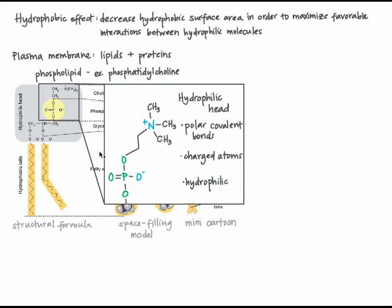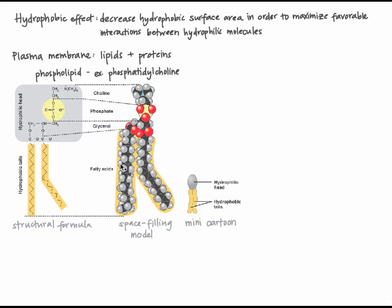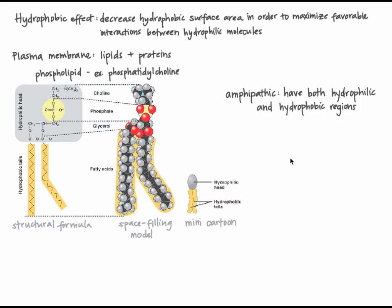The hydrophilic head varies between types of phospholipids, but all contain some fully and/or partially charged atoms. Phosphatidylcholine contains both fully charged atoms, shown in blue, and partially charged atoms, shown in green. Each phospholipid is one molecule because the hydrophilic head is covalently bonded to the hydrophobic tails. But because the molecule is rather large, it has two distinct regions with very different chemical properties. Molecules that consist of both hydrophilic and hydrophobic regions are called amphipathic.